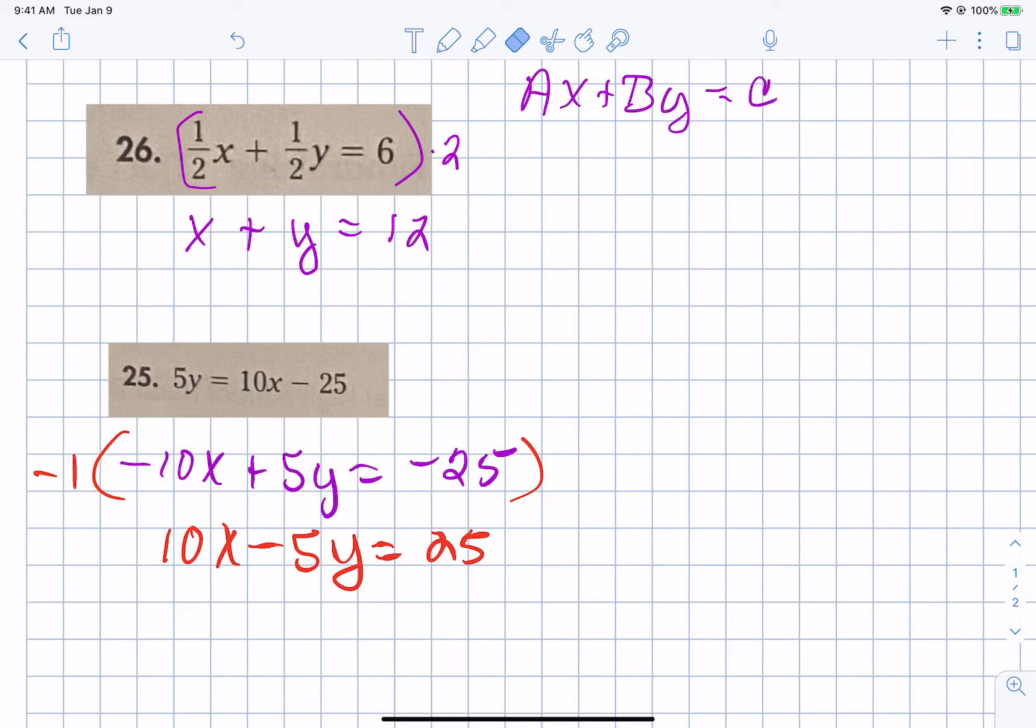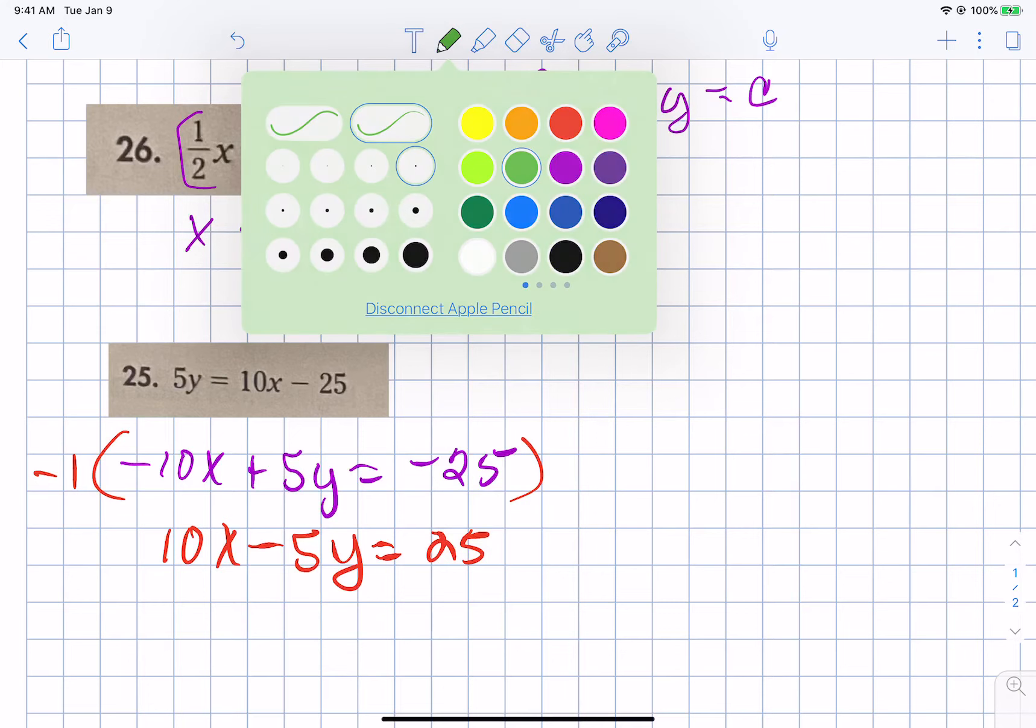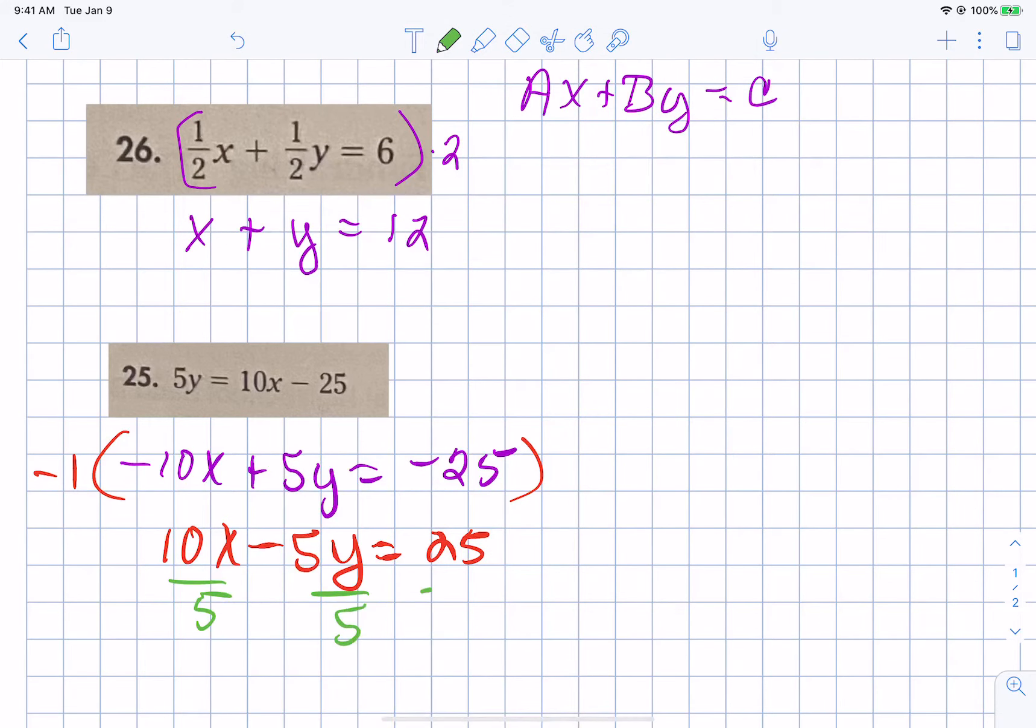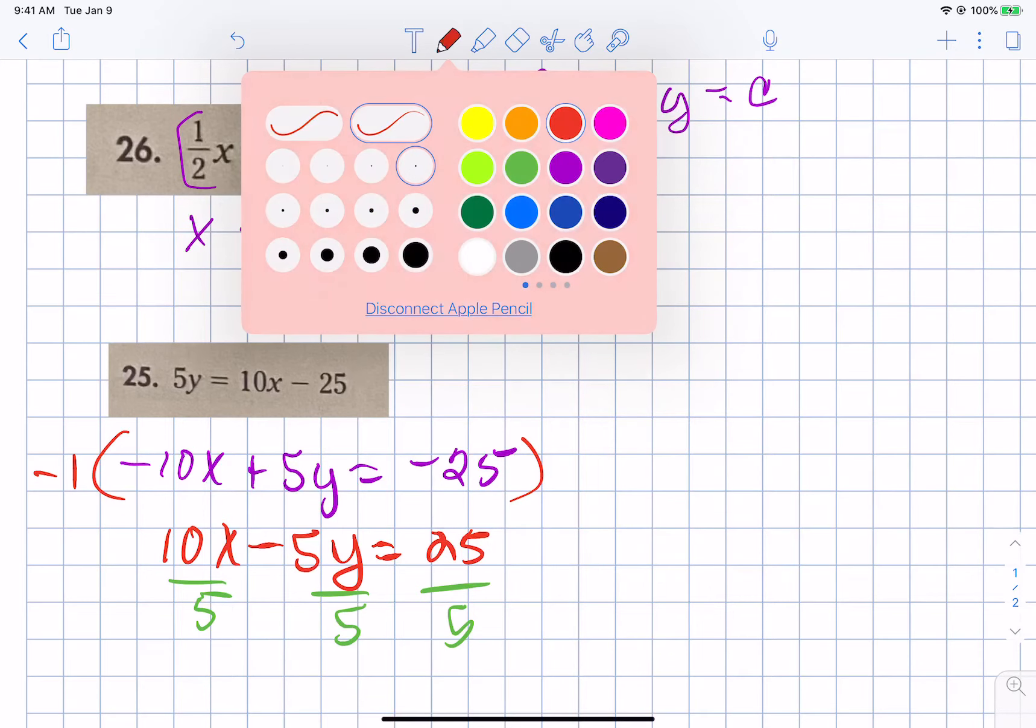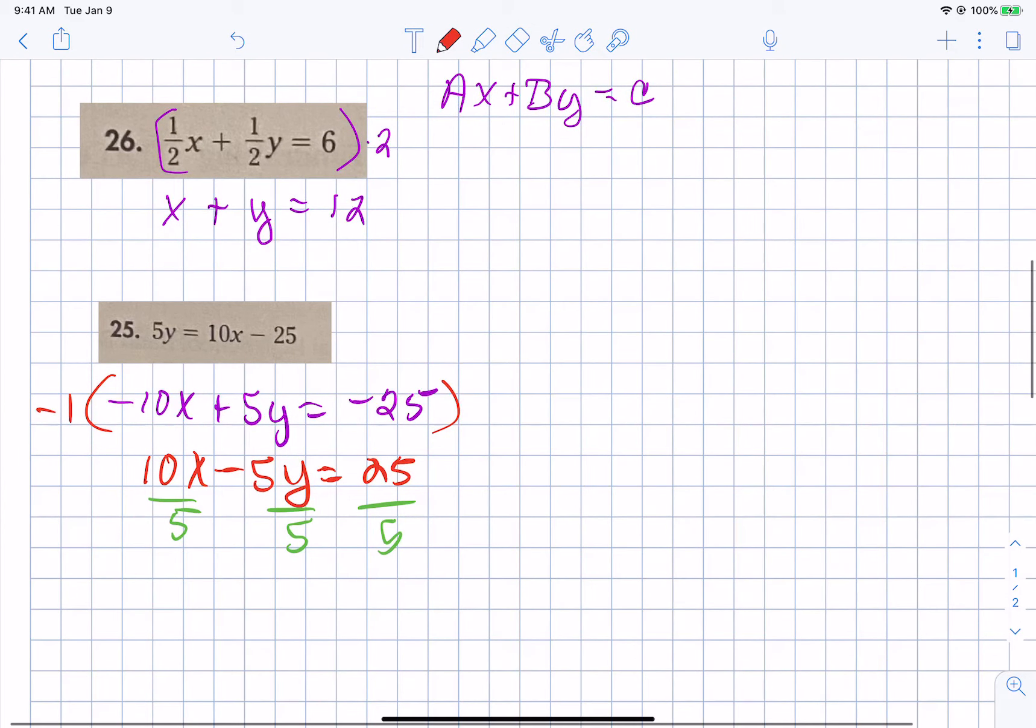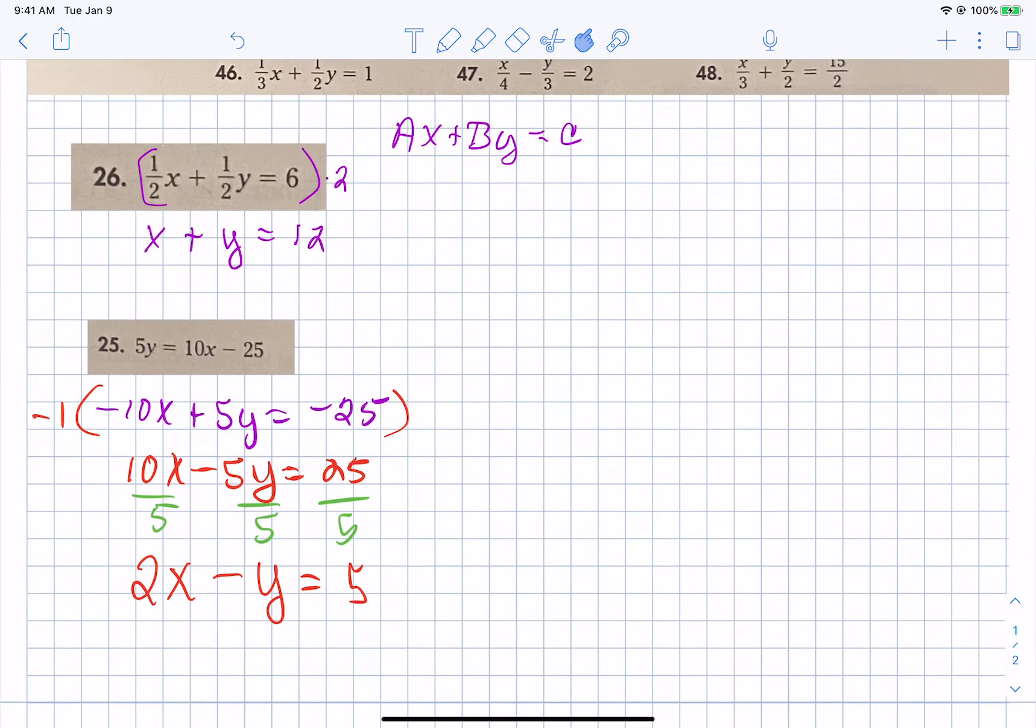5, you got it. So because we can divide by 5, that's what they mean by reduce it down as much as possible with the greatest common factor. So the answer for 25 is 2x minus y equals 5. We have the x, then the y equals the number. The greatest common factor of 2, 1, and 5 is just 1. And we got our front x being positive.